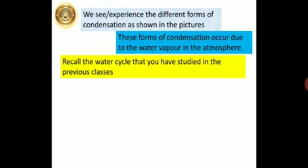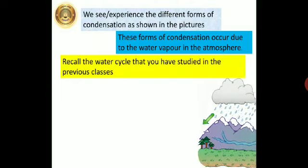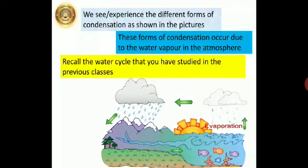Let's recall the water cycle that we have studied in the previous classes. Here you can see the water cycle. The evaporation takes place due to the sun's heat. The evaporated air rises higher. The light air rises higher, there it condenses as the temperature is low, and comes down in the form of water droplets.